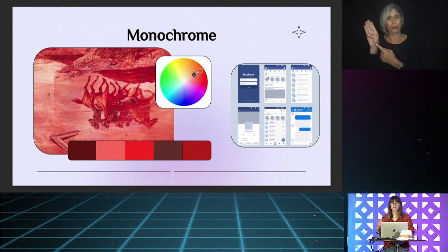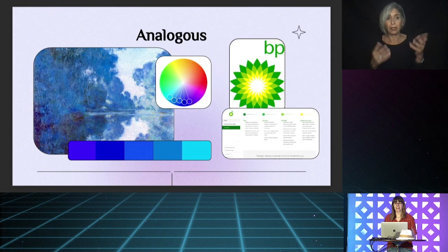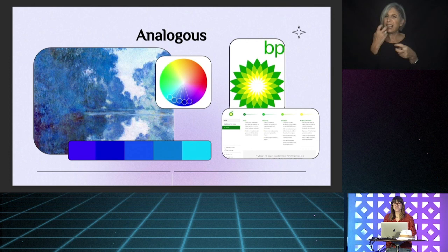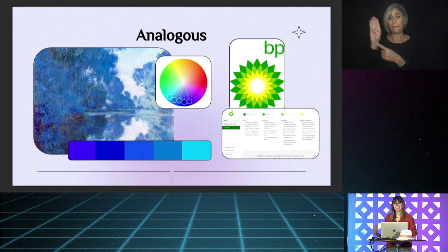And of course, if we're talking about monochromatic UIs, we've got to talk about Facebook. Facebook is blue, blue, blue, and we only very occasionally see other colors in the case of errors or informational warnings. A similar color scheme is analogous, which uses colors that are next to each other on the color wheel. This is my recommendation for people who are complete design newbies, because like monochromatic schemes, they're intuitive and hard to mess up, but they also have the advantage of giving you more colors to play with — the best of both worlds. A good example of an analogous color scheme is BP: green, yellow, green, and yellow, stretching right across that section of the color wheel like a perfect arc.